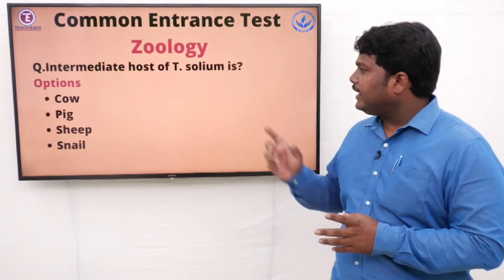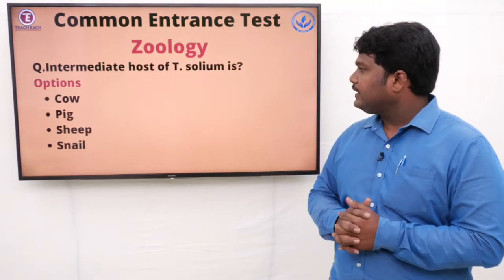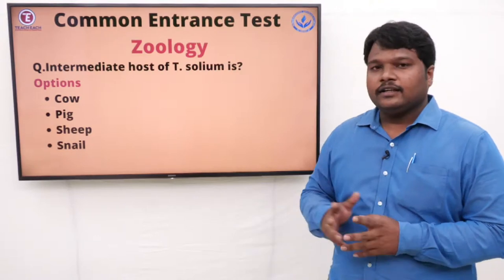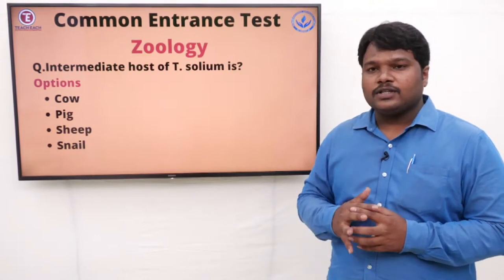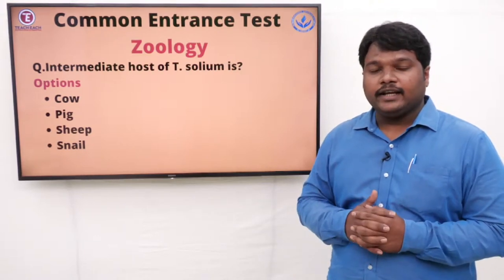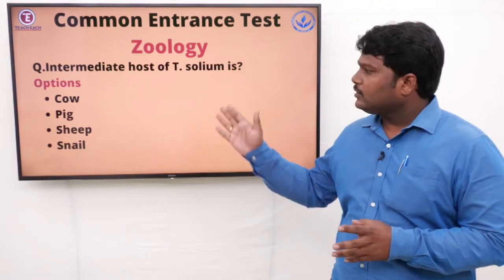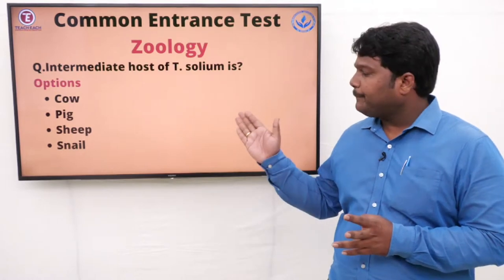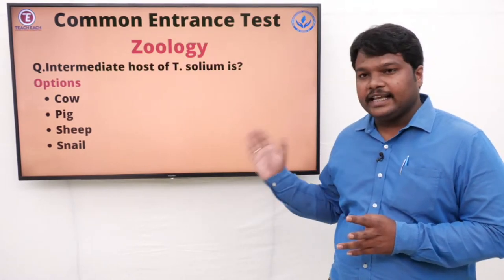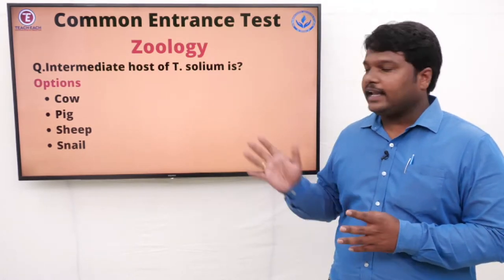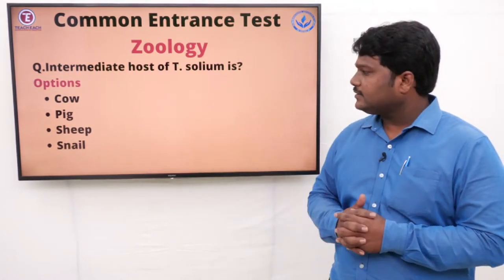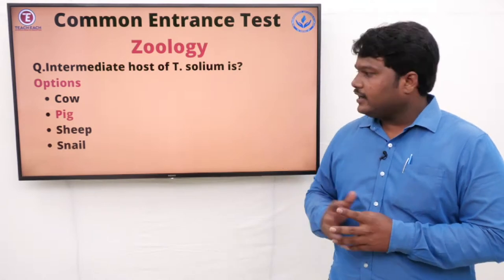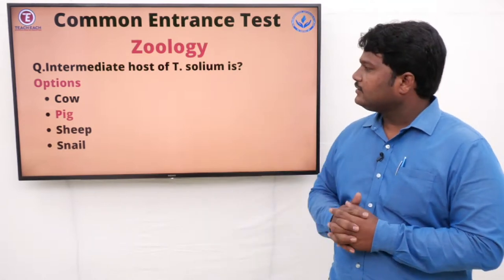Question 25: Intermediate host of Taenia solium is. Options: A) Cow, B) Pig, C) Sheep, D) Snail. The right answer is pig.